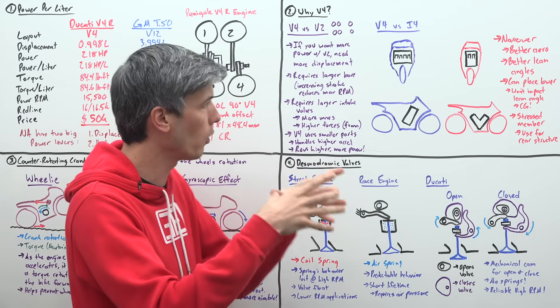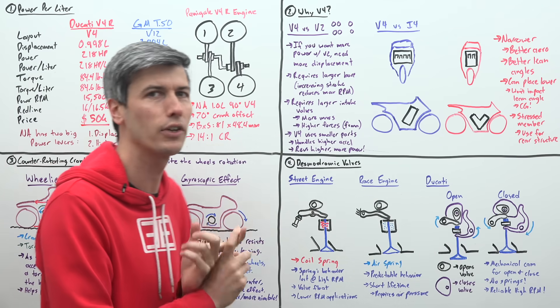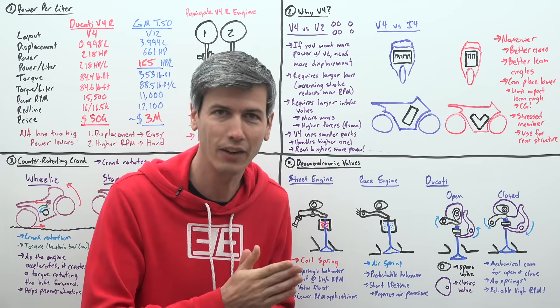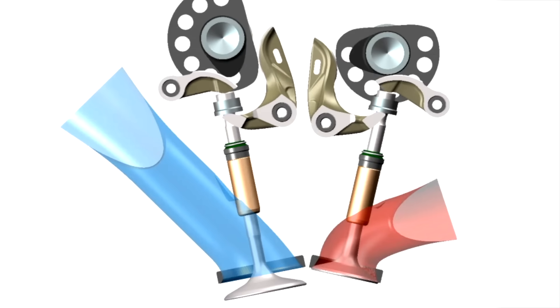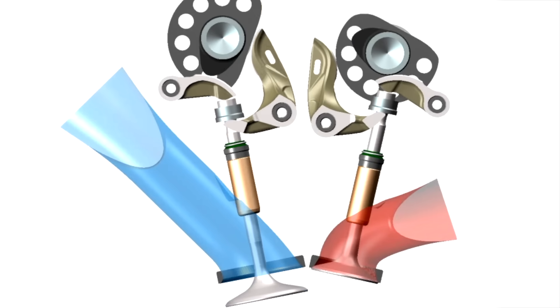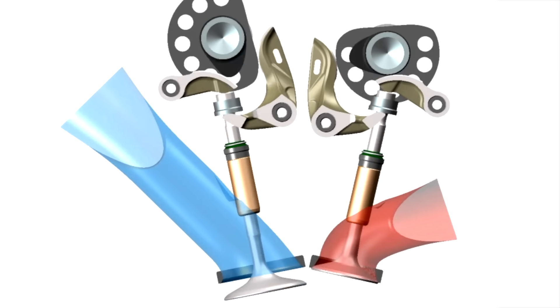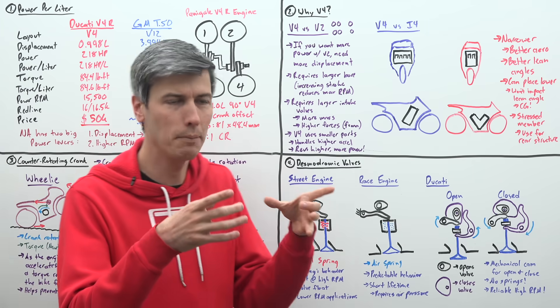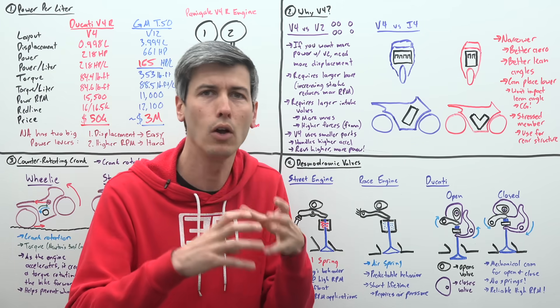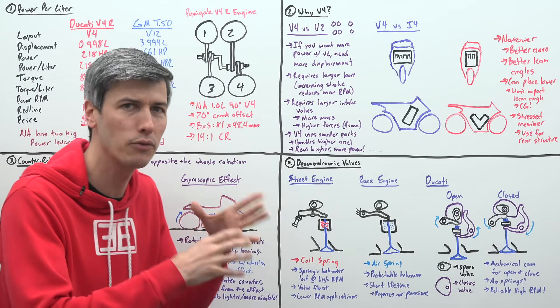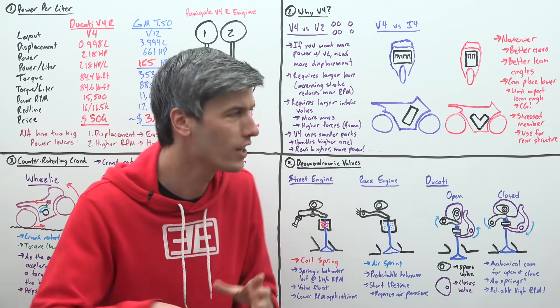Well, if you're increasing the bore, the width of the cylinders, that means you're now going to need larger intake valves. Well, larger intake valves are going to weigh more. They're going to have more mass. So it's more difficult to control that mass, as these valves are moving up and down at very high speed. So if you use a V4, it means all of your parts, your cylinders, your valves are going to be smaller. They're going to have less mass overall, and you can put higher acceleration forces on them, and thus rev higher.